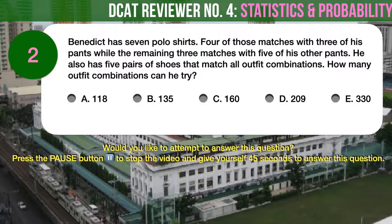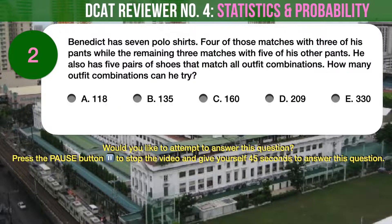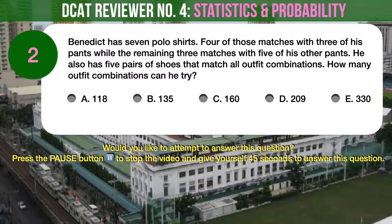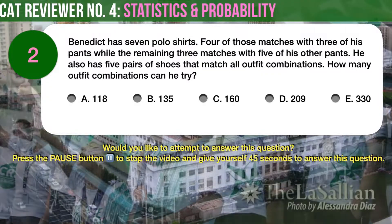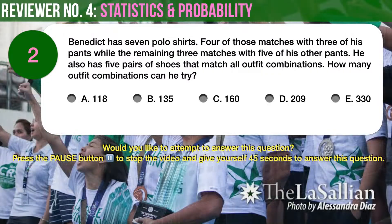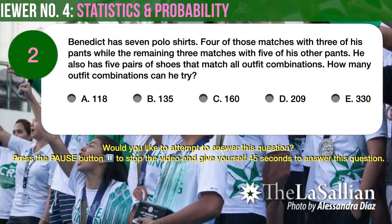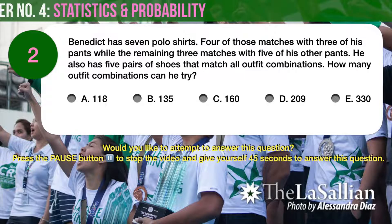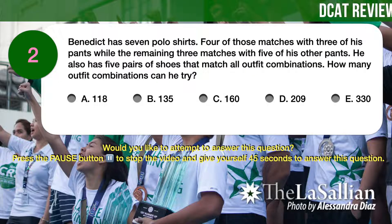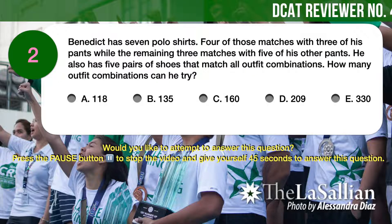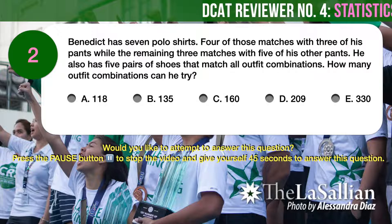Question number 2. Benedict has 7 polo shirts. Four of those match with 3 of his pants while the remaining 3 match with 5 of his other pants. He also has 5 pairs of shoes that match all outfit combinations. How many outfit combinations can he try?